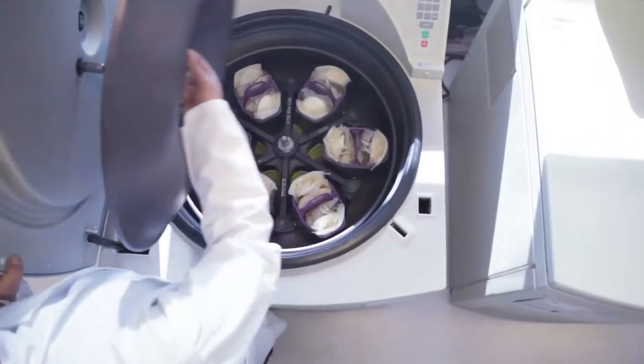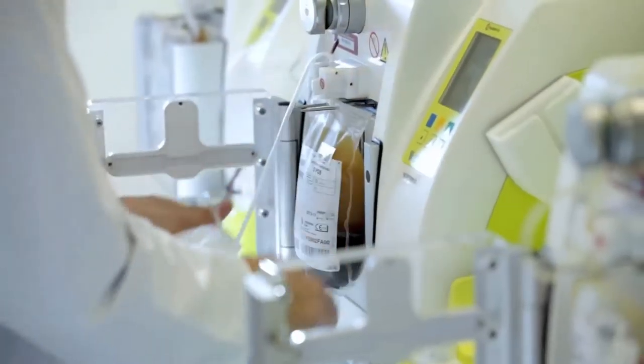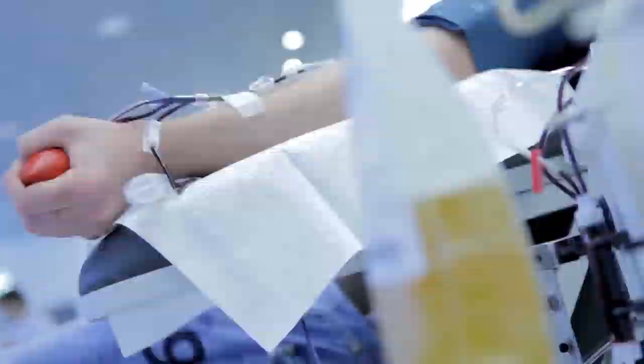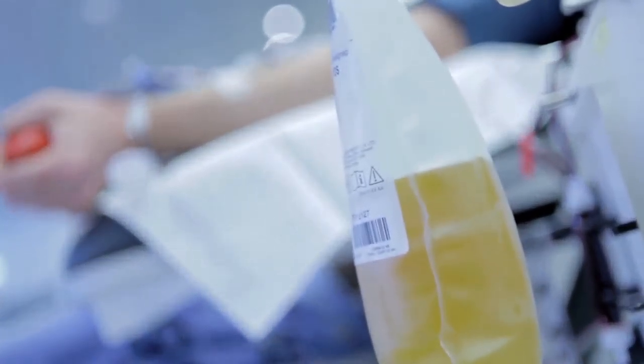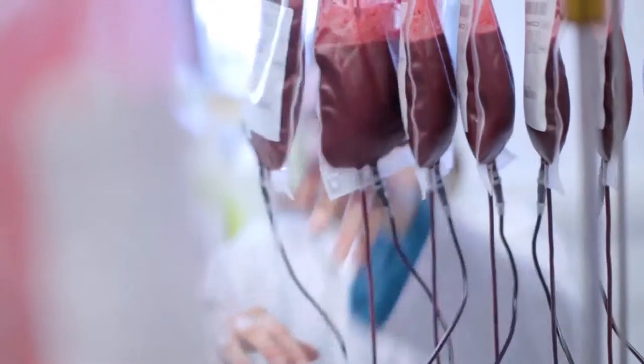Donated blood is separated into components: red blood cells, blood platelets and plasma. Donors also have the possibility of only donating plasma. Patients only get the components they need to prevent unnecessary side effects.